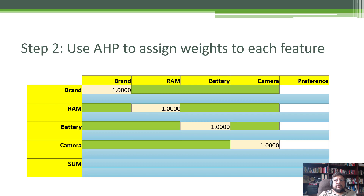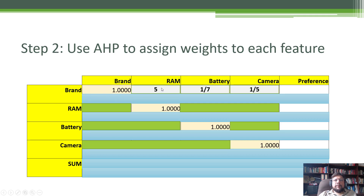The next step is you create a matrix where you have all these features. You need to start by doing a pairwise comparison — a comparison between brand and RAM, then brand and battery, and then brand and camera. When you're doing a comparison, you could have a preference for what is in the row. So in the row we have brand. Brand versus RAM is showing five — that means we have five times more preference for brand as compared to RAM.